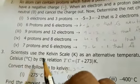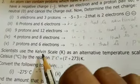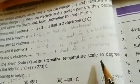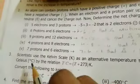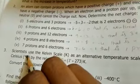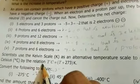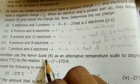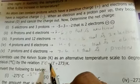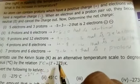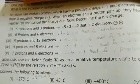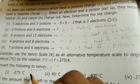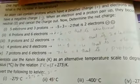Third sum: scientists use the Kelvin scale as an alternative temperature scale to degrees Celsius. The relation is: temperature in Celsius is equal to T plus 273 Kelvin. So the formula means: Celsius number equals Kelvin value. Let's substitute the values.